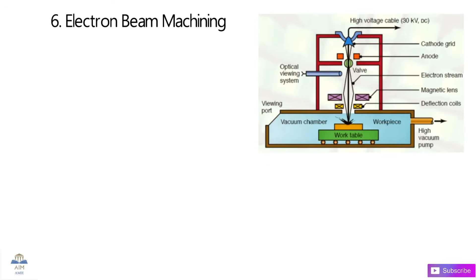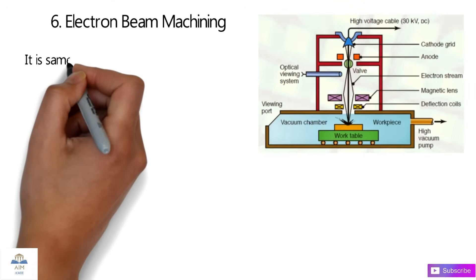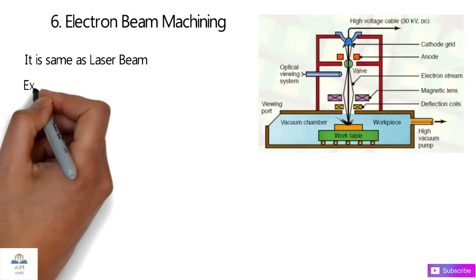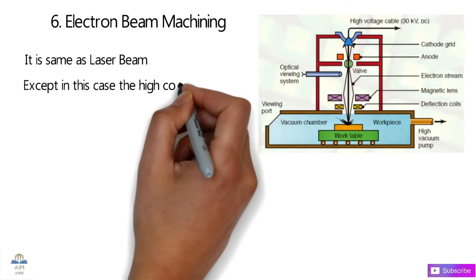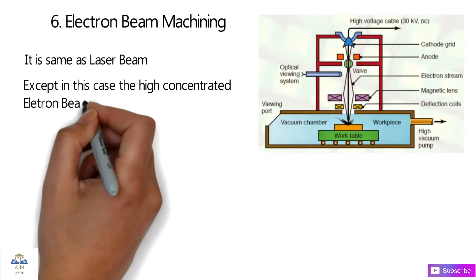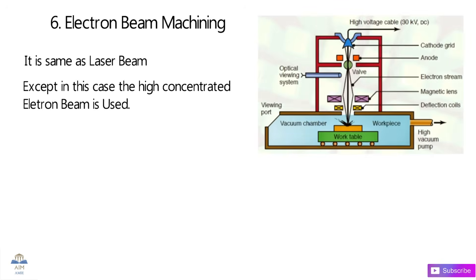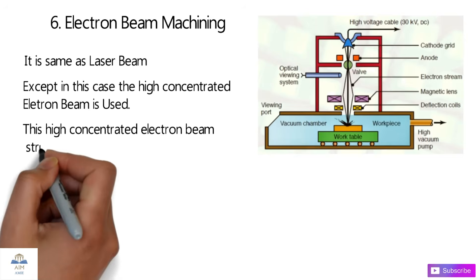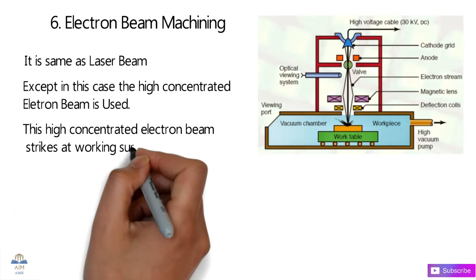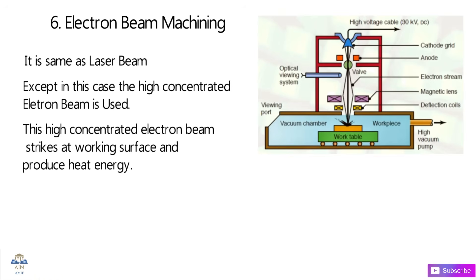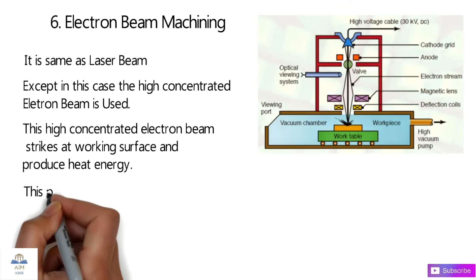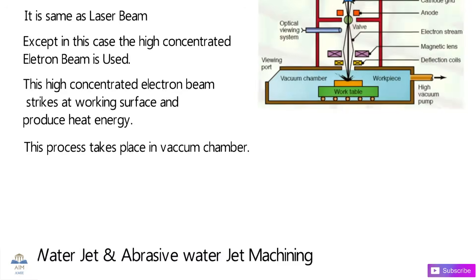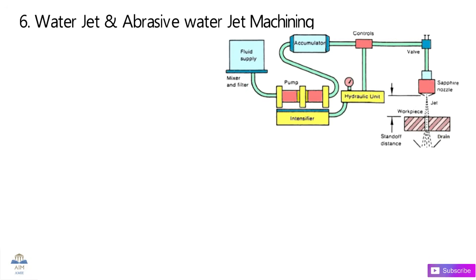Electron Beam Machining is similar to Laser Beam Machining, but instead of a laser, a highly concentrated electron beam is used. This concentrated electron beam strikes the workpiece at a point, producing heat energy at the working surface, which causes vaporization and thus material removal.